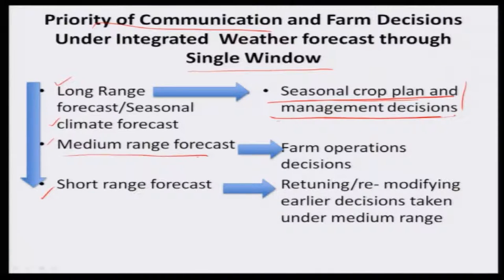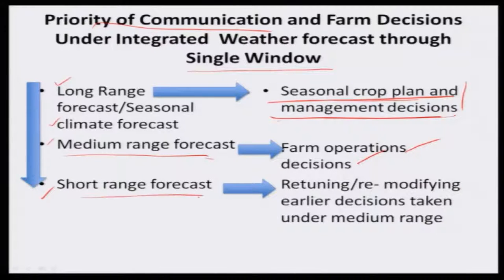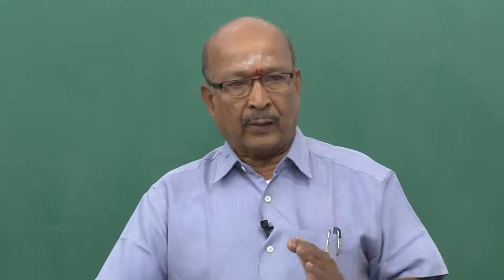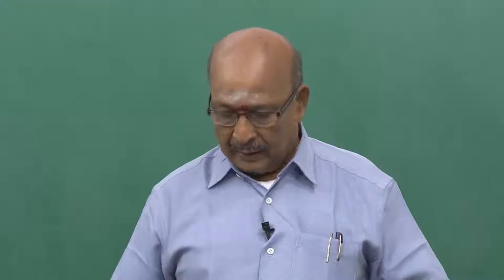The second step is medium range weather forecast for farm operation decisions. We will be knowing weather-sensitive farm operations, weather-sensitive crops, and weather-sensitive crop stages, and accordingly the weather forecast information can be used. Finally, short range is for retuning or remodifying earlier decisions taken under medium range weather forecast — refining your crop planning or farm decisions according to the forecast, thereby trying to reduce the crop production risk.